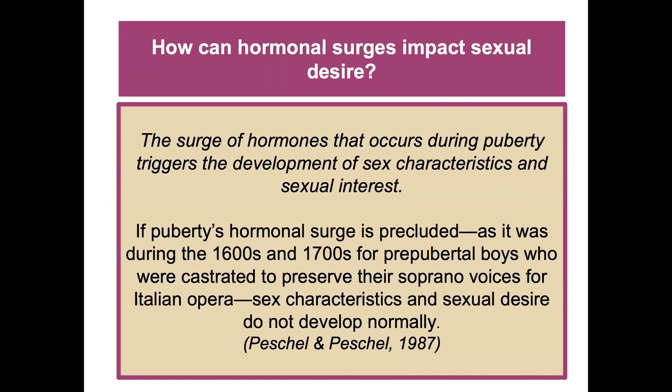The surge of hormones during puberty triggers the development of sex characteristics and sexual interest. If puberty's hormonal surge is precluded — as happened in the 1600s and 1700s for pre-pubertal boys who were castrated to preserve their soprano voices for Italian opera — the sex characteristics and sexual desire did not develop normally.